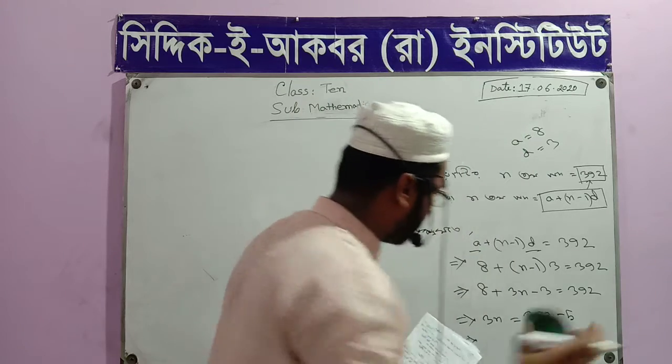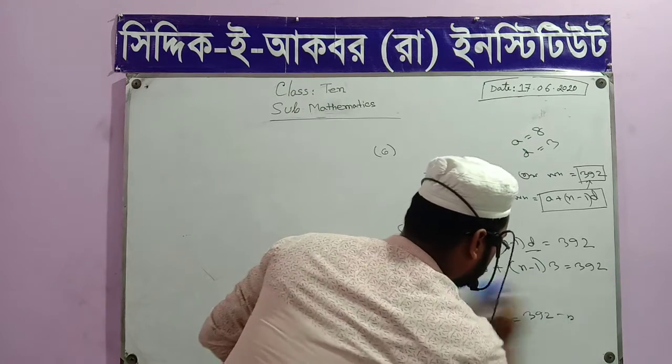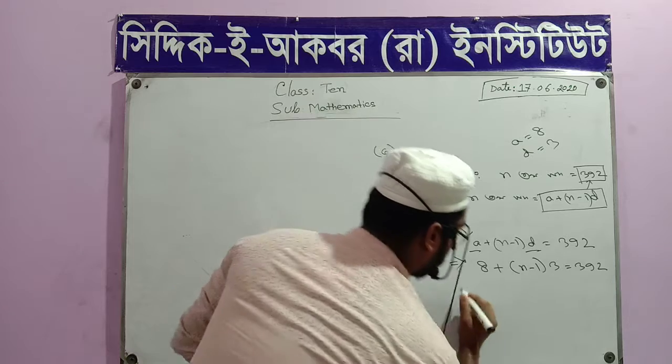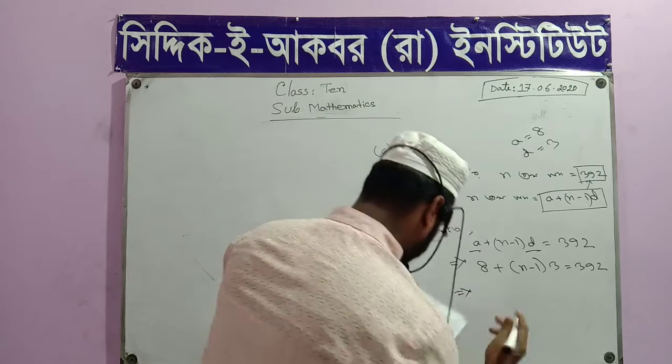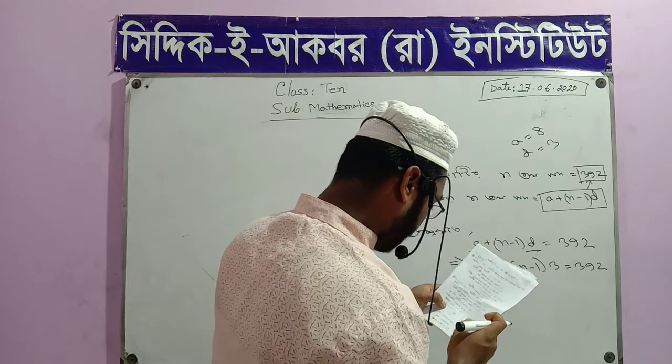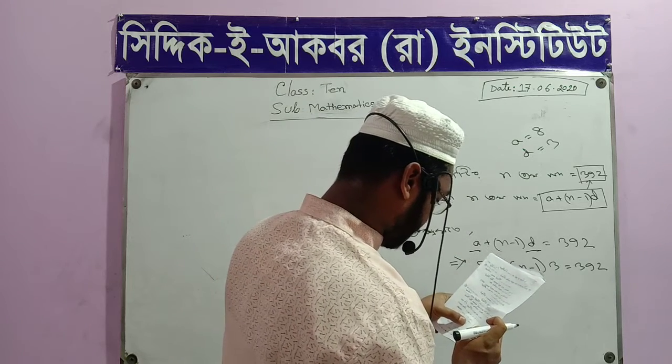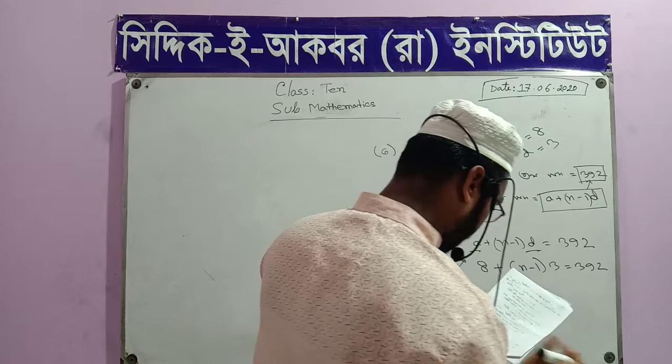I'm going to go to the engineer's problem. So, here, all the time: 8 plus n minus 1 into d equal to 312.